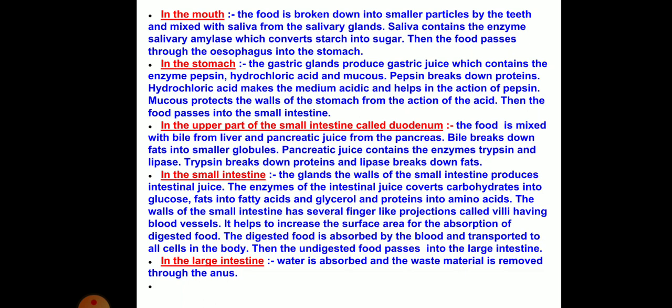Partly digested food enters the small intestine. In the mouth, carbohydrates are digested; in the stomach, proteins are partly digested. The length of the small intestine is about 7.5 meters. In the upper part of the small intestine, bile from the liver and pancreatic juice from the pancreas get mixed with the food.